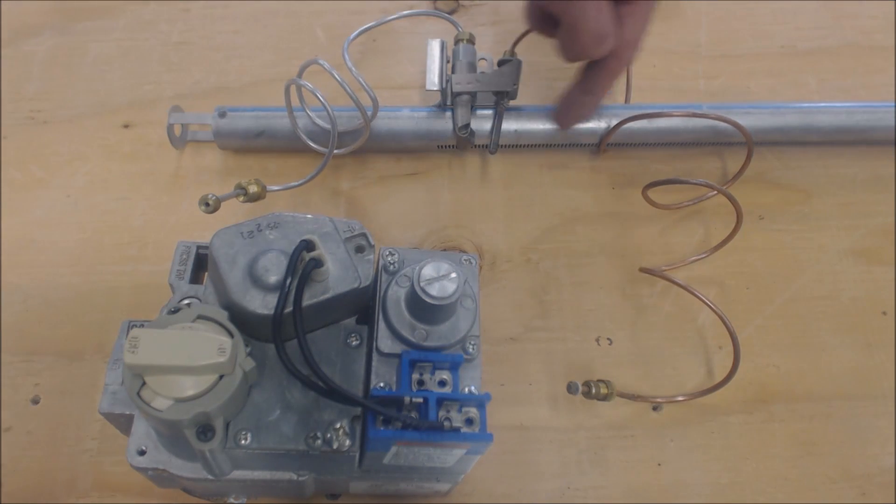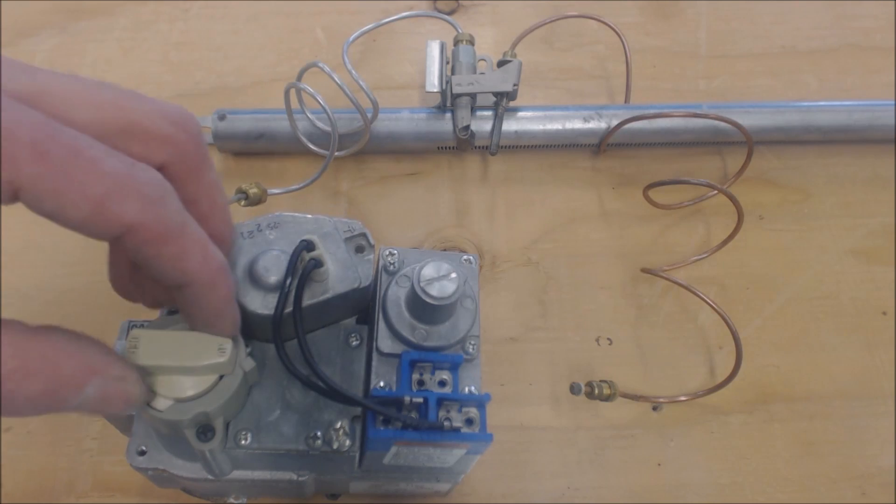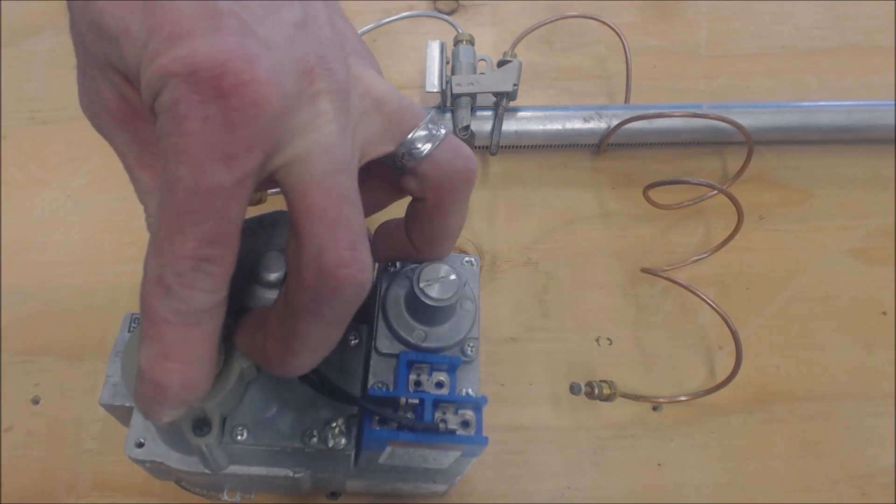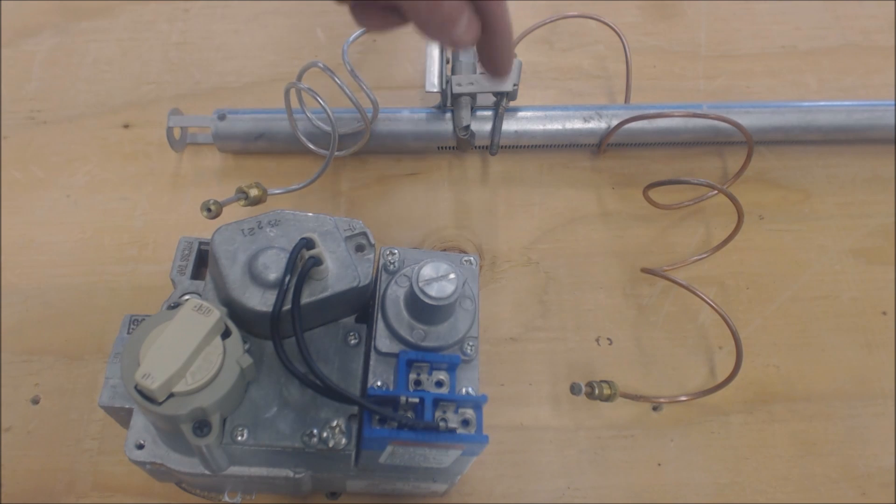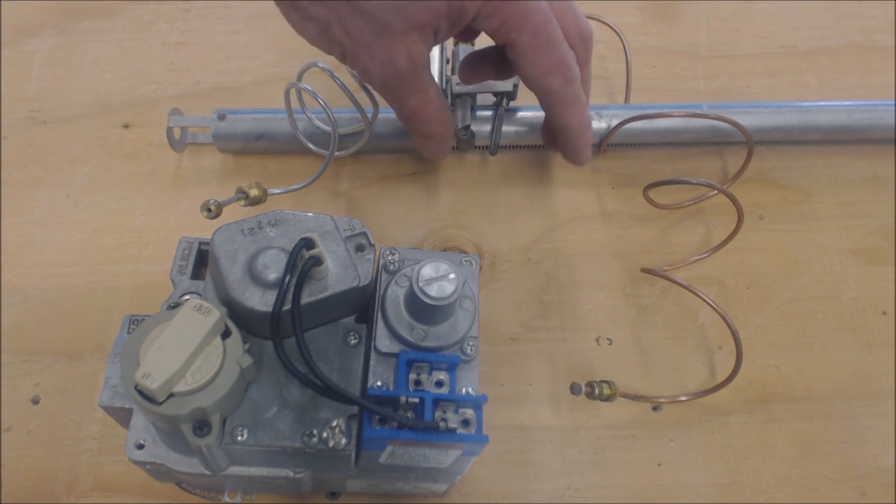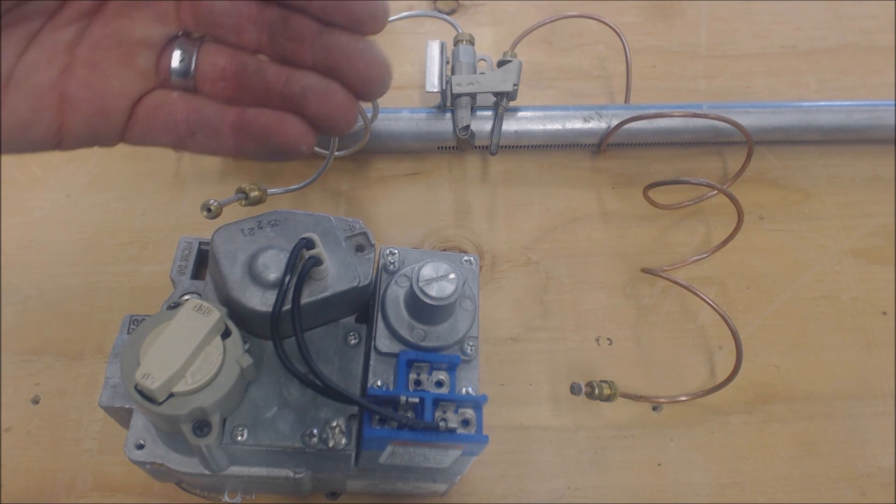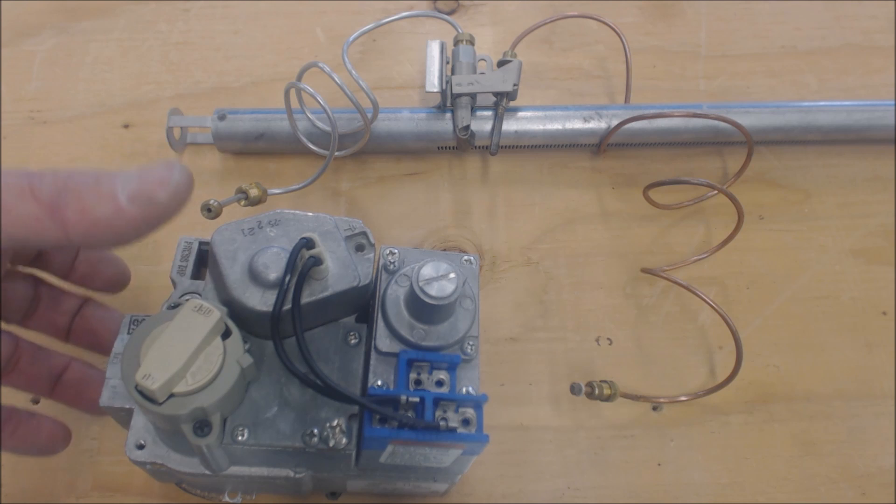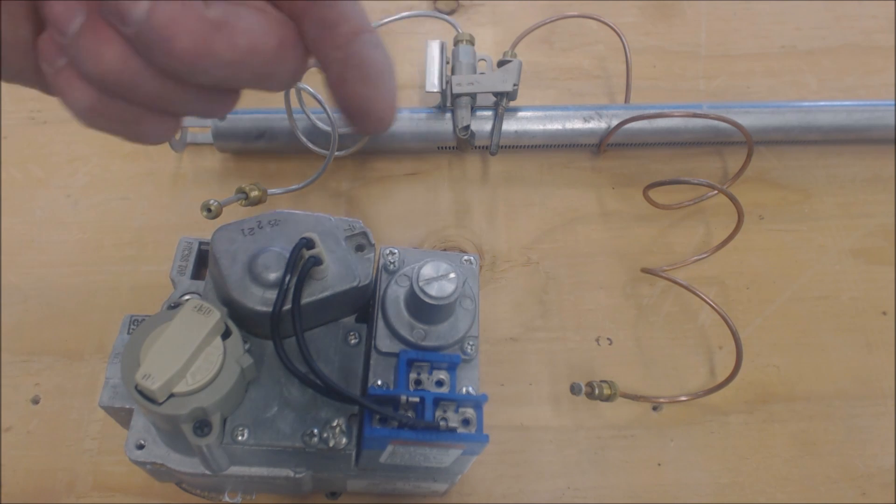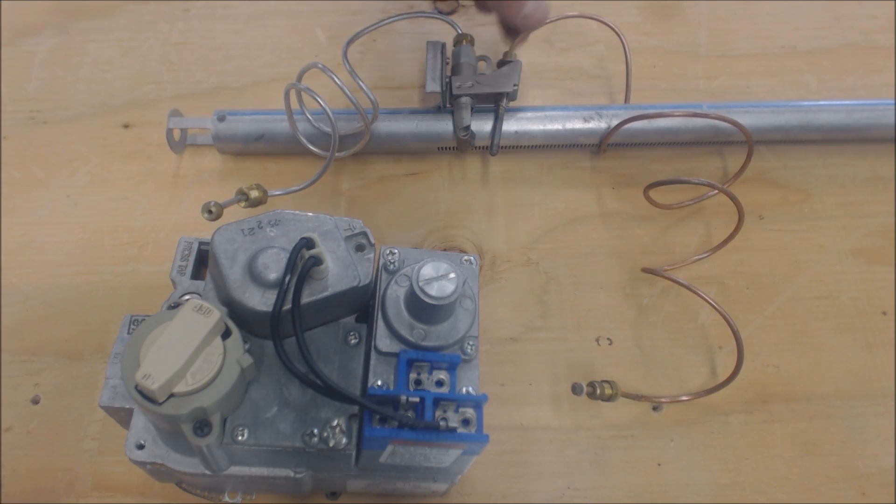As far as the pilot goes, you're holding this button down, allowing gas to flow through and lighting it. Any time you let up on this after a minute, two minutes, three minutes, the flame ends up going out. That has to do with either the thermocouple or inside the combination gas valve there's a solenoid.